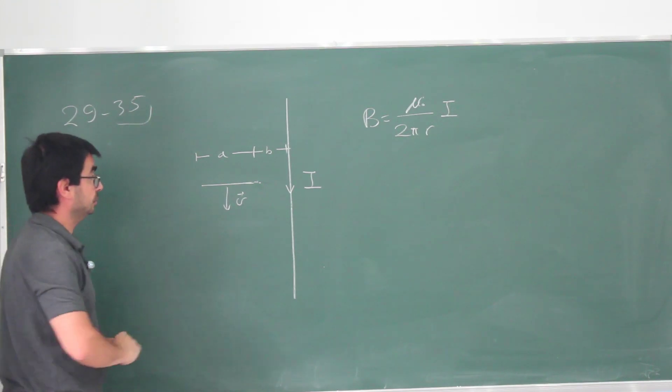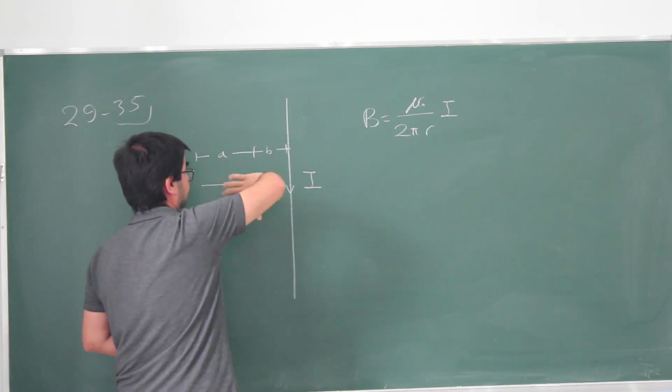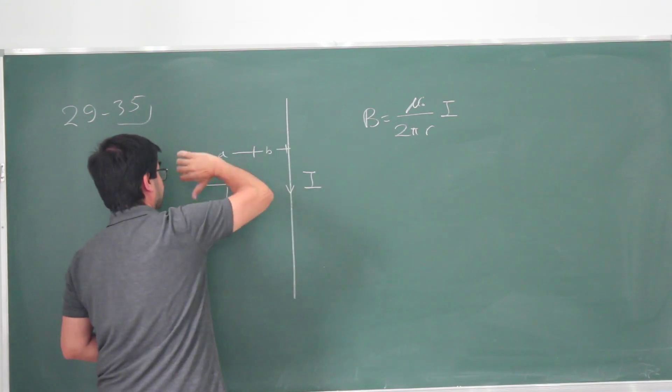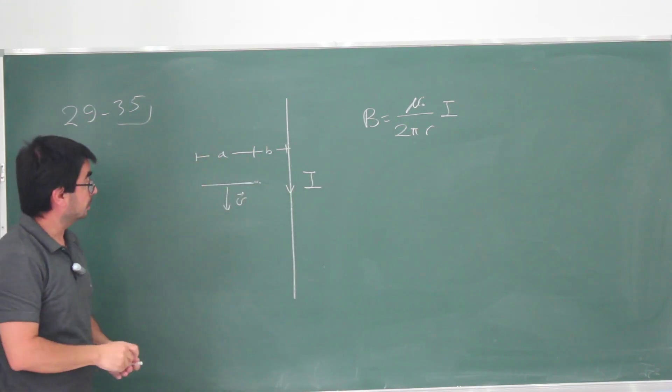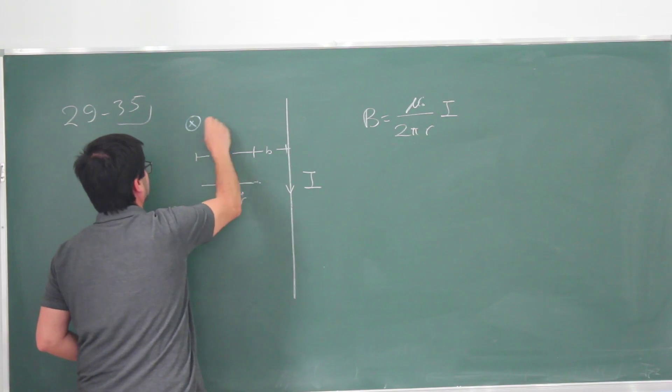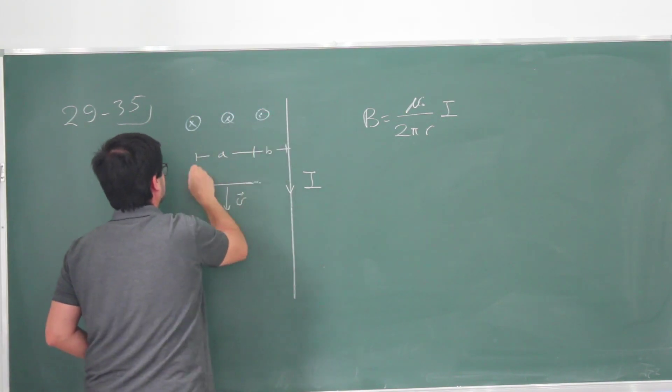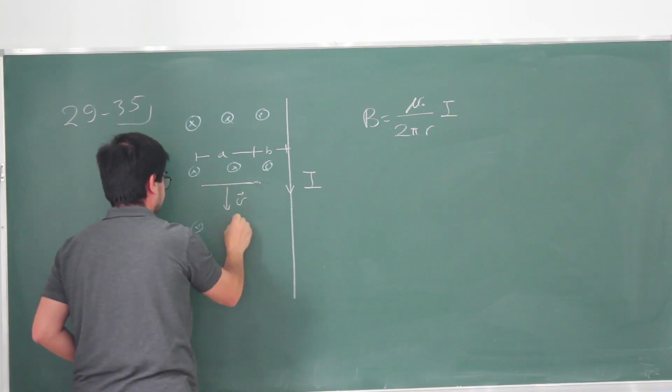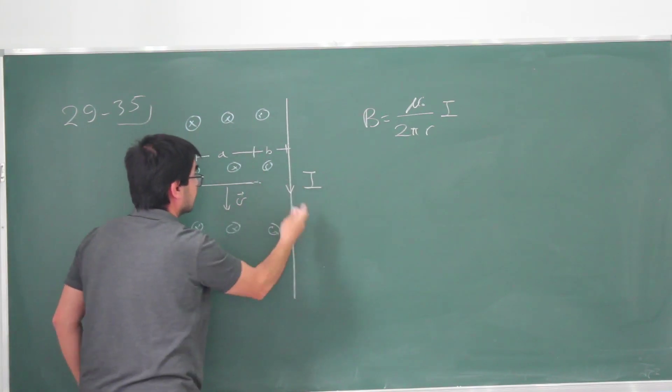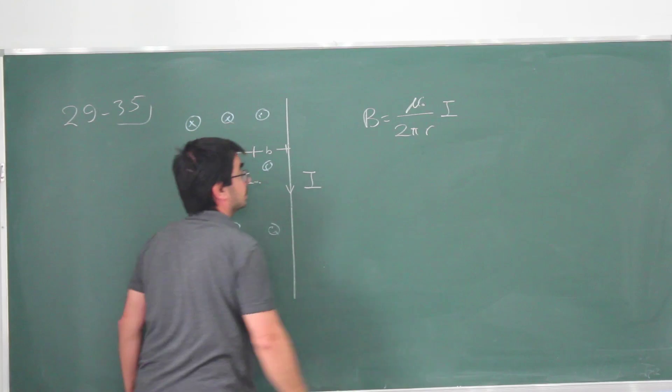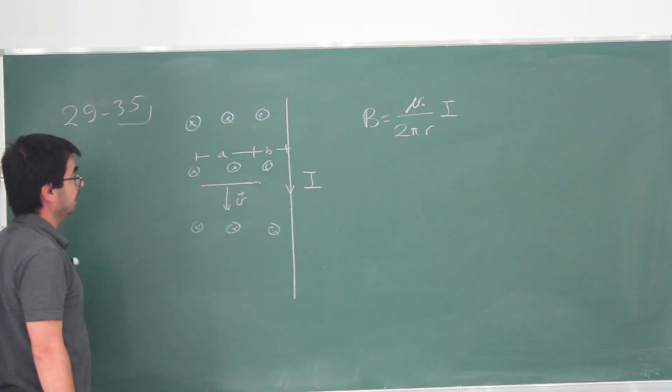If I put my thumb in the direction of the current for this part, it's going to be into the plane of the blackboard. It's stronger as you get closer to the wire. It decreases as 1 over r as you move farther away from the wire.